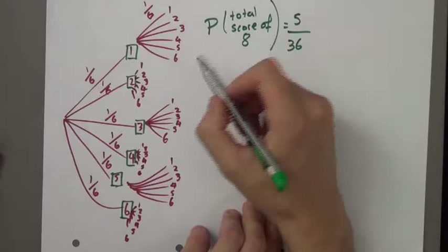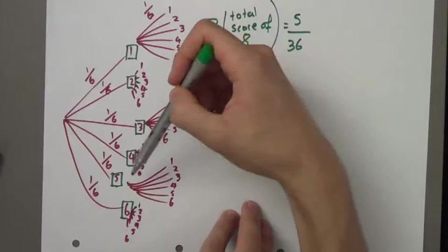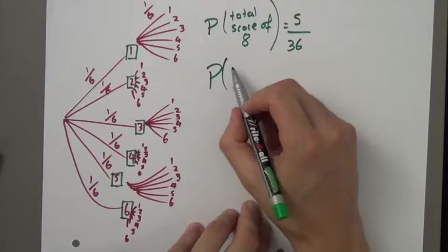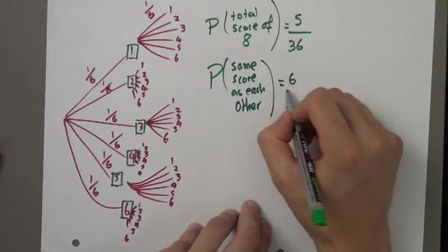Next: find the probability that the two dice will show the same score as each other. One-one: yes. Two-two: yes. Three-three: yes. Four-four: yes. Five-five: yes. Six-six: yes. So the probability that they show the same score as each other is going to be six out of 36, which is one-sixth.